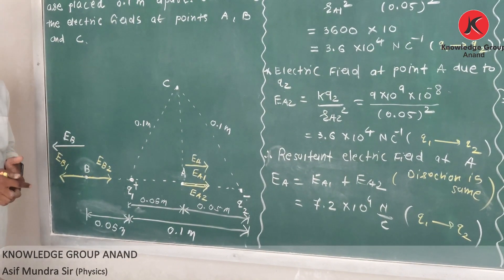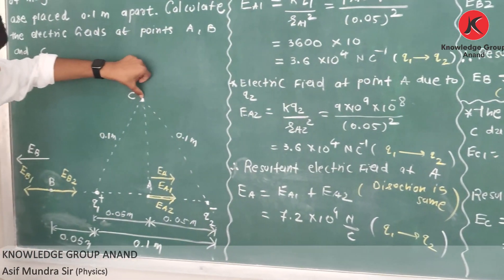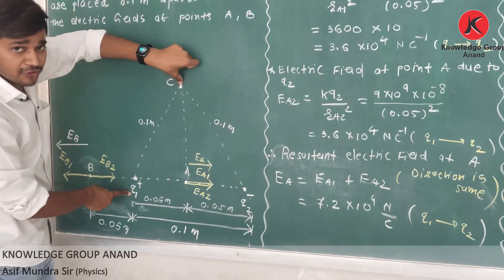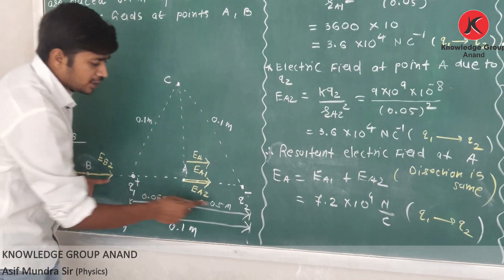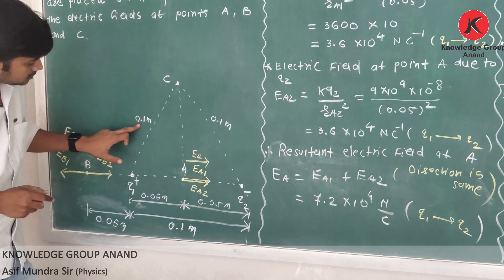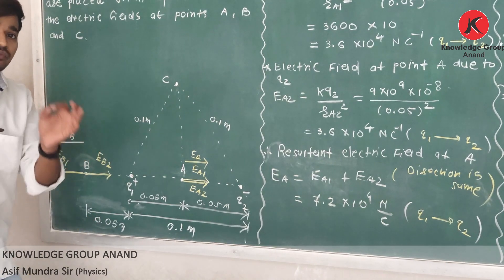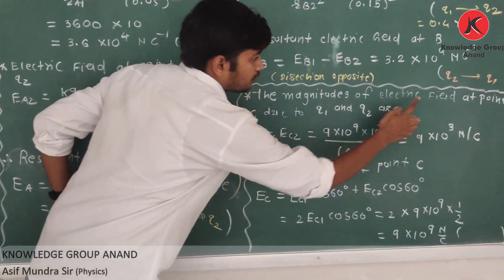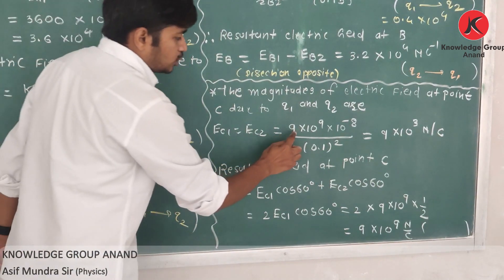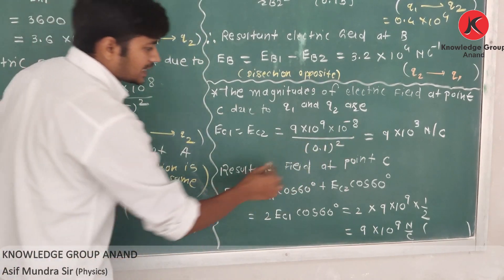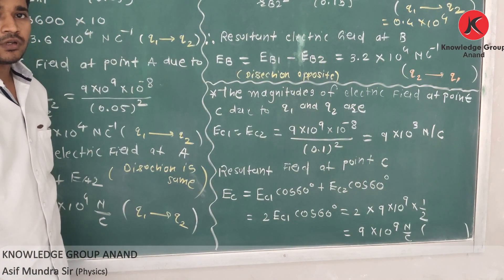Okay, now last — what is the resultant electric field at point C? Here at point C, q1 has magnitude 10 raised to minus 8 and q2 has magnitude 10 raised to minus 8, so magnitudes of charges are equal. From q1, distance is 0.1 meter; from q2, distance is 0.1 meter — distances are also equal. So EC1 = EC2 = 9 into 10 raised to 9 times 10 raised to minus 8, divided by 0.1 squared. The answer is 9 into 10 raised to 3 newtons per coulomb.